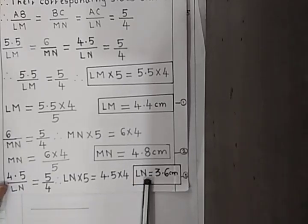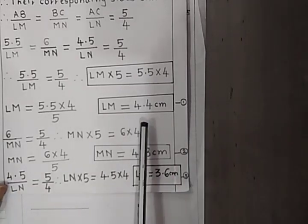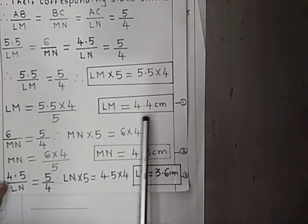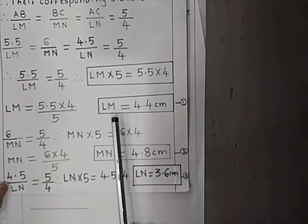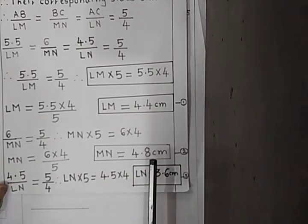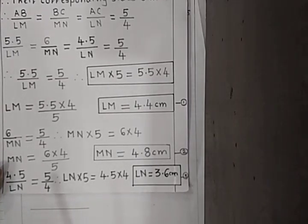Using this property, we find out the sides of triangle LMN: LM is equal to 4.4 cm, MN is equal to 4.8 cm, and LN is equal to 3.6 cm, using the property that corresponding sides of similar triangles are in the same proportion.